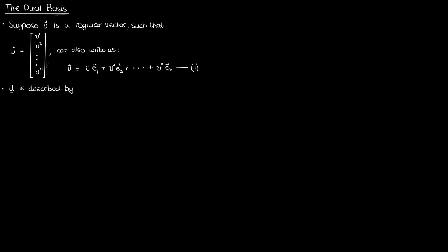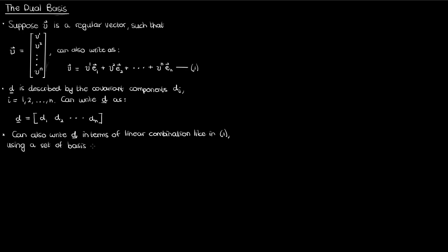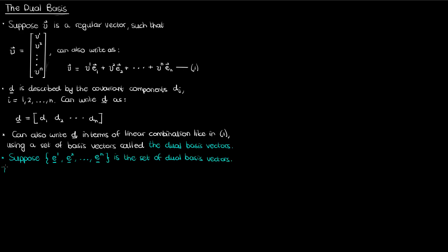Let's also suppose that I have a dual vector d described by covariant components d sub i, where i varies from 1 to n. We've mentioned in previous videos that we can write a dual vector as a row vector with elements d sub i. So a regular vector is written as a column vector and a dual vector is written as a row vector. Now just like with regular vectors in equation 1, we can write the dual vector d as a linear combination involving dual basis vectors, denoted e super 1, e super 2, all the way to e super n. I'll call this equation 2.